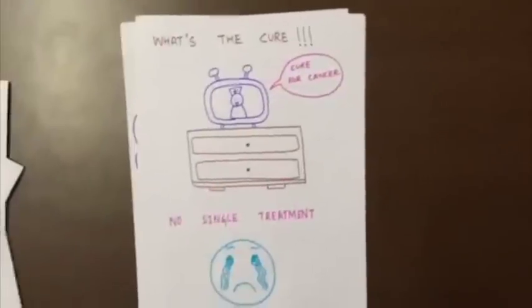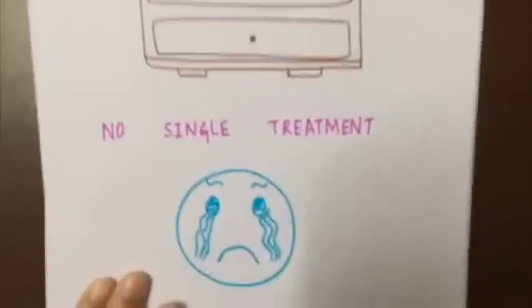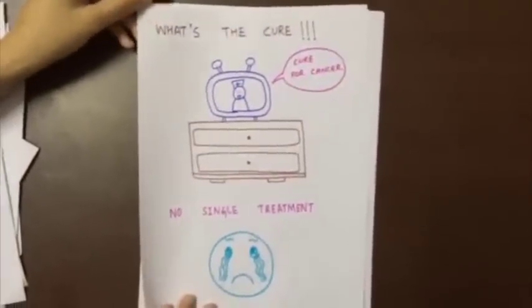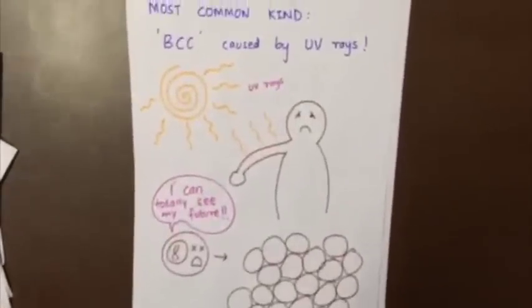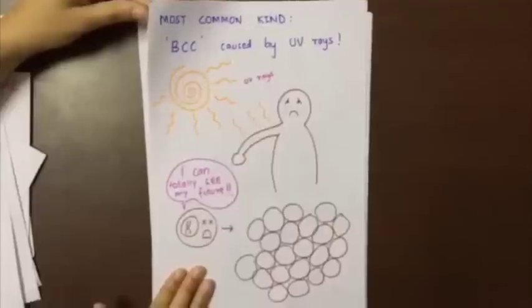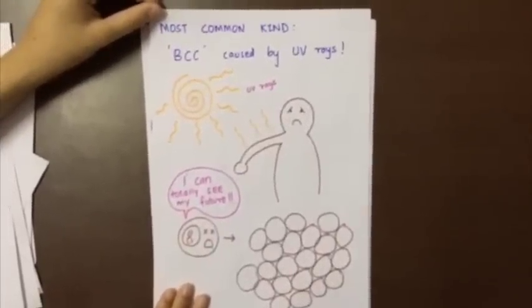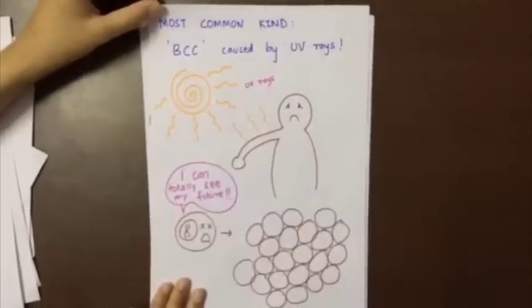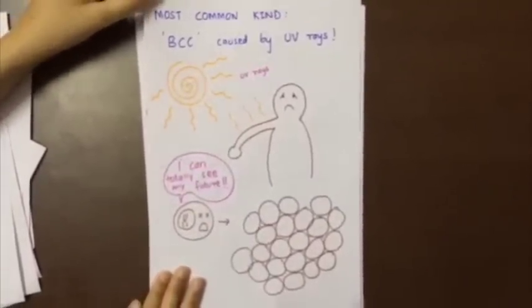So why haven't we found a cure yet? We always hear all this talk about finding the cure for cancer. But the problem is that cancer cannot be solved with a single treatment because they are all so different and work in complex ways. For example, the most common form of cancer — basal cell carcinoma, or BCC — is usually caused by sunlight. Ultraviolet rays from the sun cause random genetic mutations in the cell, mutations that often lead to melanin growth, which is why people who tan are more likely to develop skin cancer.